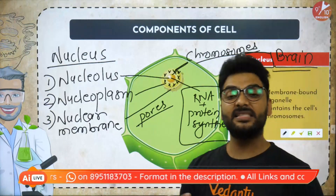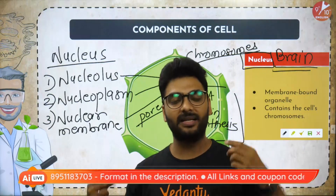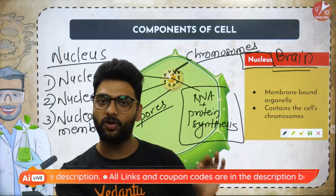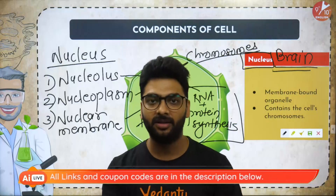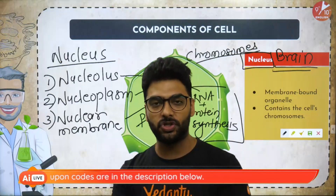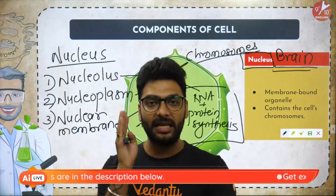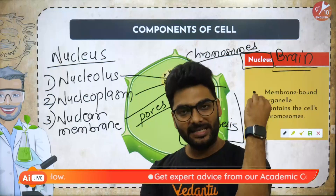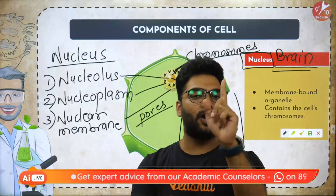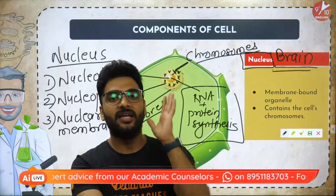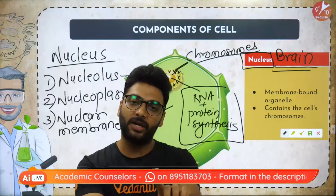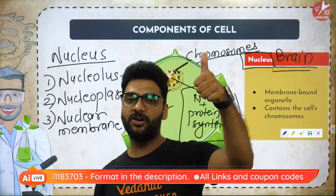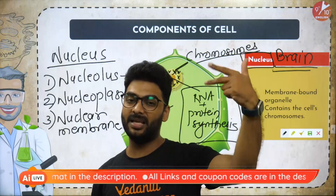Now you are in 9th standard — let's learn smartly and quickly so you can finish the syllabus on time. If you pay attention in class, you won't need to open your book again afterwards. So far we have covered cell wall, cell membrane, cytoplasm, and nucleus.